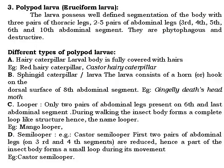Polypod larvae, also called eruciform larvae, possess three pairs of thoracic legs and two to five pairs of abdominal legs present on the third, fourth, and up to the tenth abdominal segments. They are phytophagous and cause great damage to crops. Types of polypod larvae include the eruciform caterpillar.